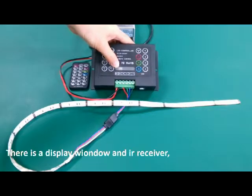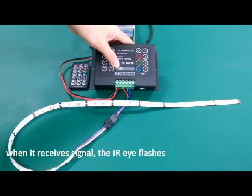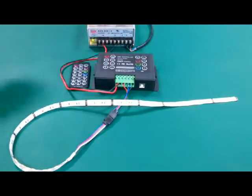There is an IR receiver in the display window. When it receives a signal, the light flashes. Now we turn on the controller.